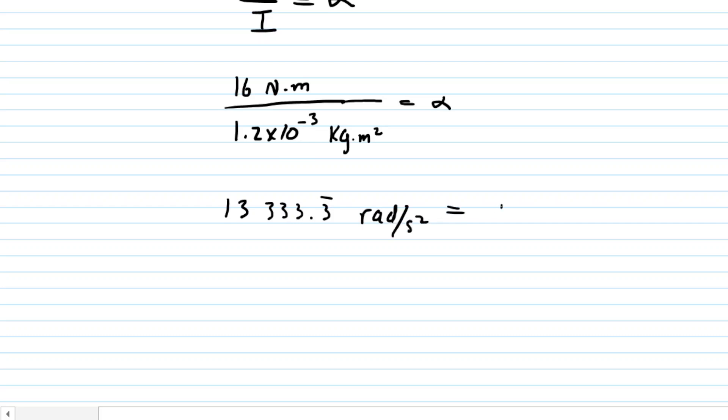Now we can use that to calculate the angular velocity, which is the question in part B. We recall from rotational kinematics that the final angular velocity equals the initial angular velocity plus the angular acceleration multiplied by the time.